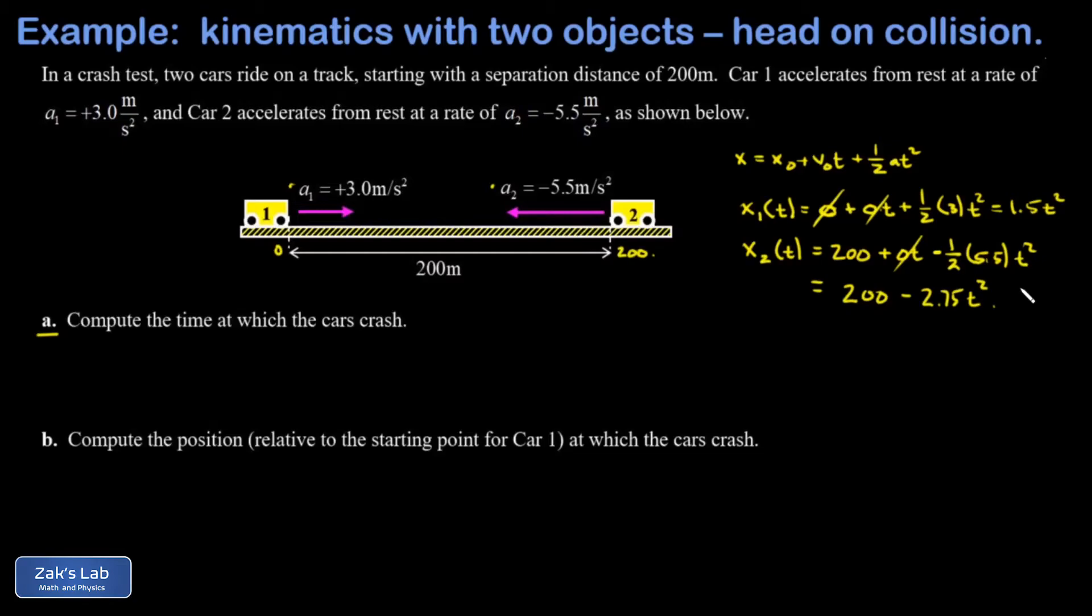Now we have two position functions that describe the position of each of these cars for all moments in time. Now we have to do a little bit of physical reasoning. What does it mean for the cars to crash in terms of the mathematics? It means the positions are the same, so x1 equals x2. Then I can plug in the position functions for each of these cars: x1 as a function of time is 1.5 t squared, x2 is 200 minus 2.75 t squared.